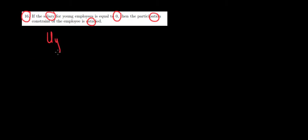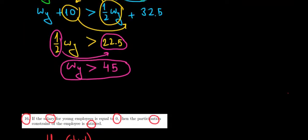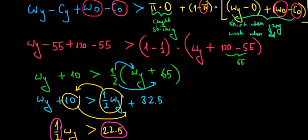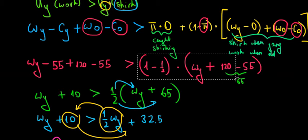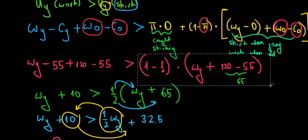We want to find the utility of a young employee when he is shirking, but we calculated that in the previous video. So we're going to use that here. We calculated that the utility of shirking would be this expression. We already plotted some numbers, so let's just use that — I'm going to copy it over here below.